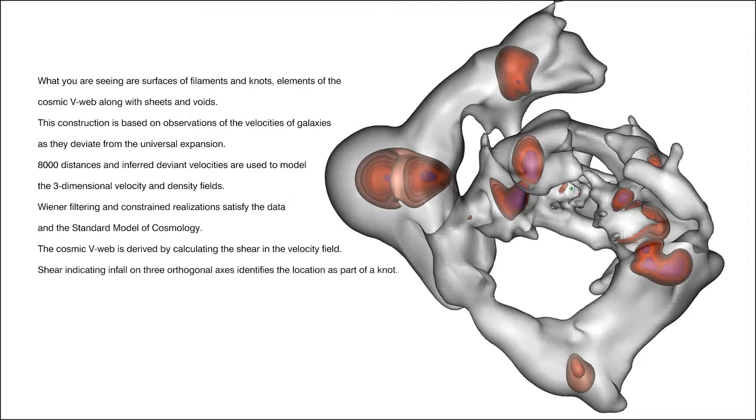Shear indicating infall on three orthogonal axes identifies the location as part of a knot. Outflow on all three axes is the signature of a void position. In between are filaments, collapse on two axes, and sheets, collapse on one axis.